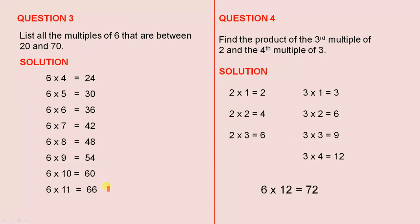The last number has to be less than 70. 6 × 11 = 66. So you start from 6 × 4 and keep going up to 6 × 11, and here we have all the answers that satisfy this condition between 20 and 70.